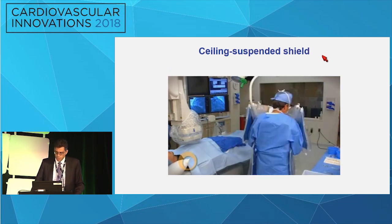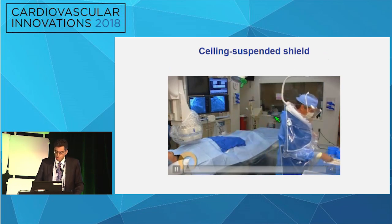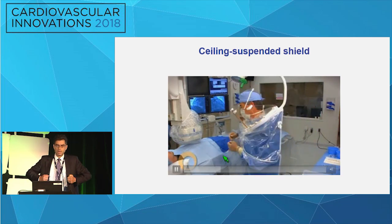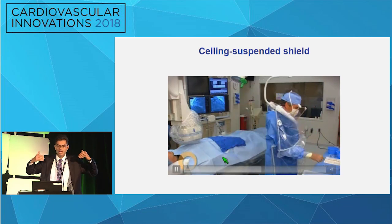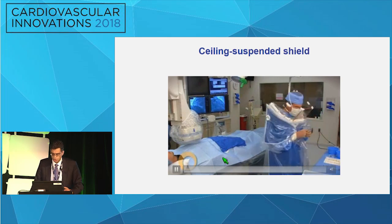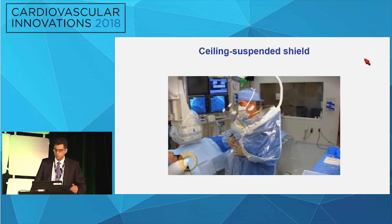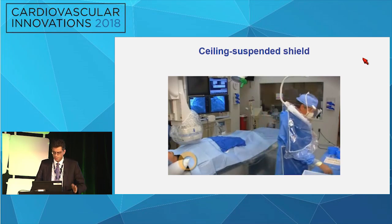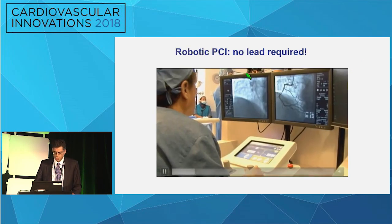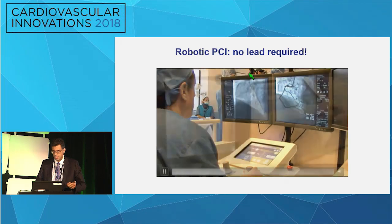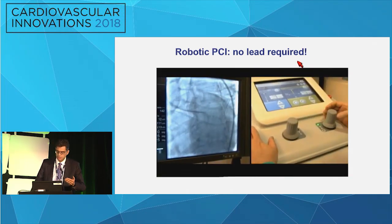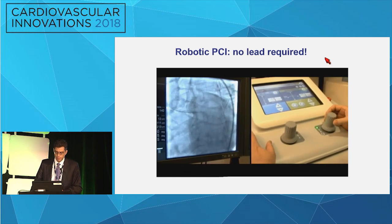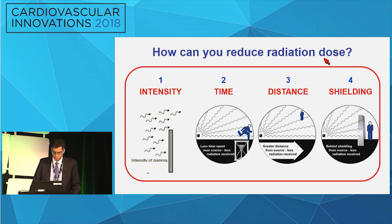If you want to go more drastic, there's a system called zero gravity — it's ceiling-suspended, and you don't have to wear the lead. It provides excellent radiation protection. Tony Speedy in Missouri uses it and swears by it — his back pain is gone, he can do cases all day. And of course there's robotic PCI where you sit comfortably in the cockpit and do the cases — maybe less for complex cases, but definitely something rapidly developing.